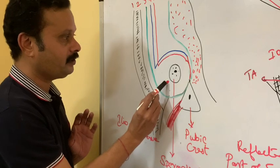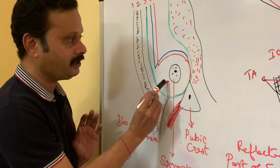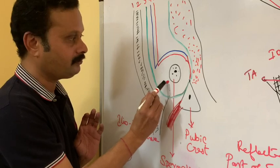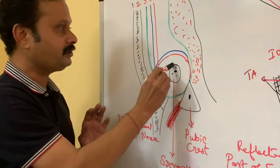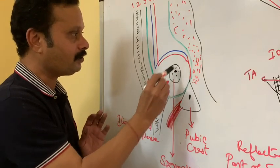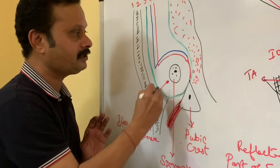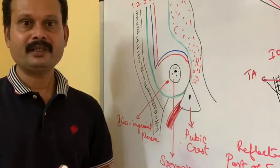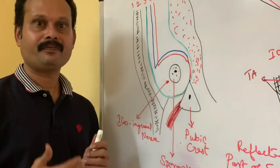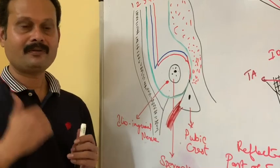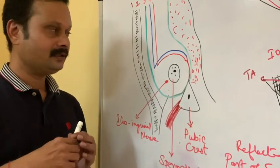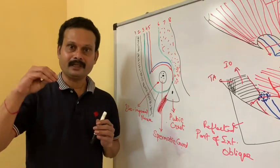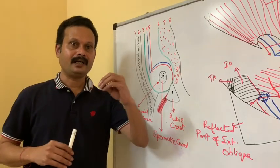The ilio-inguinal nerve, shown in red, is also a content of this inguinal canal. These two are the contents of the inguinal canal. This inguinal canal has an anterior wall, posterior wall, roof, floor, inlet, and outlet.